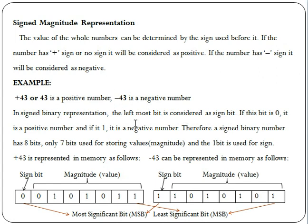In Signed Magnitude representation, if you have a decimal number to convert to binary, you use the leftmost bit — the sign bit — to indicate plus or minus. For this, you use the Most Significant Bit.